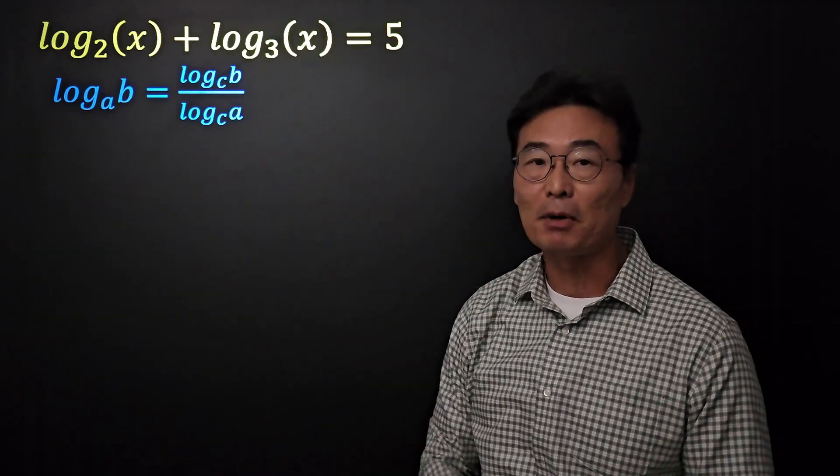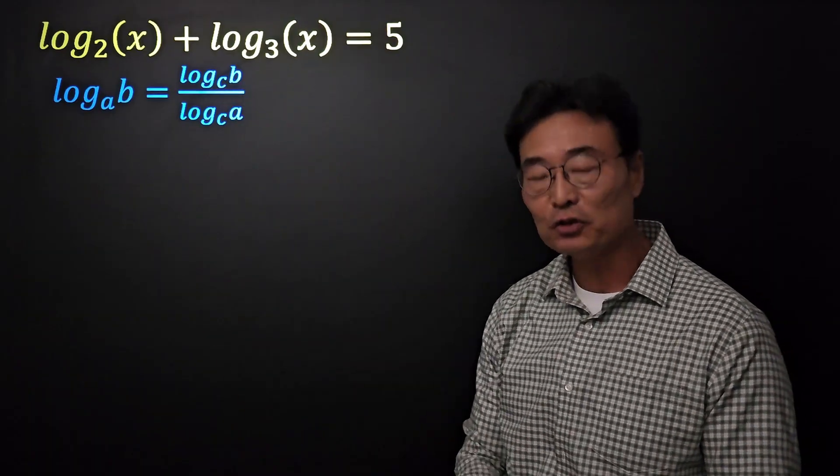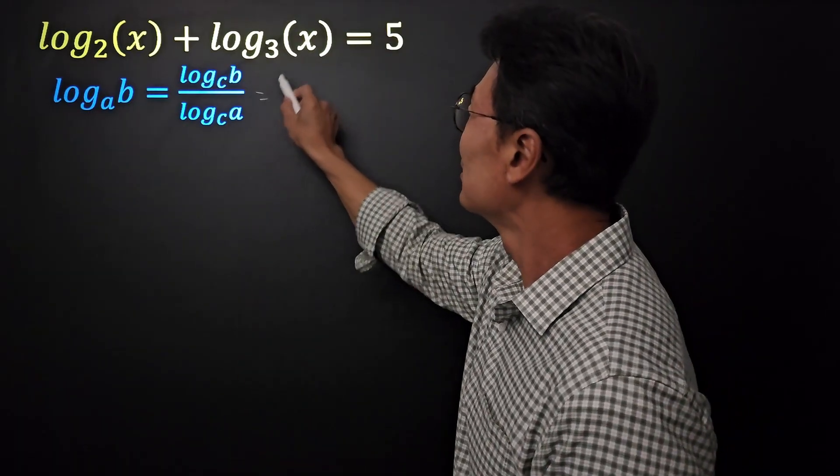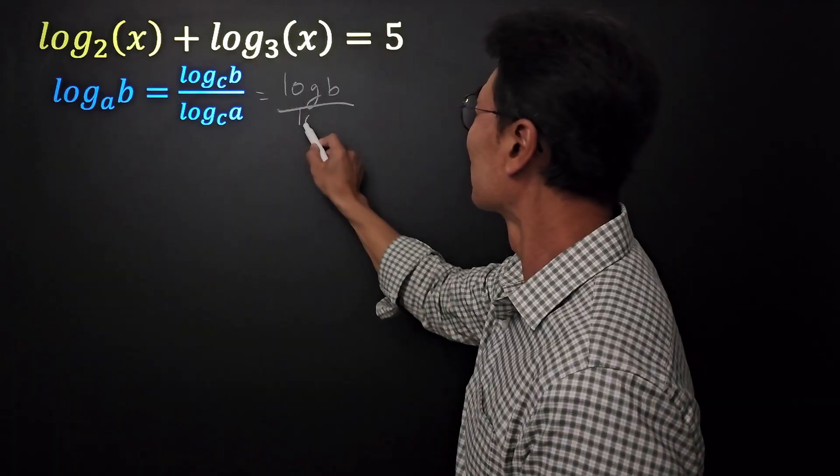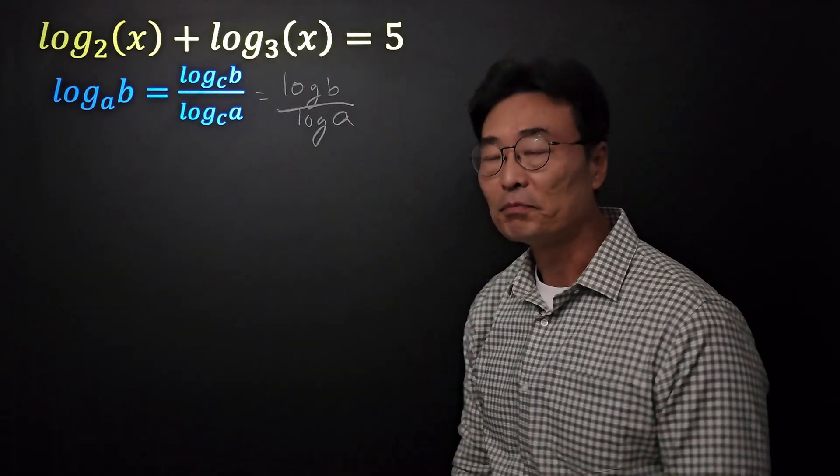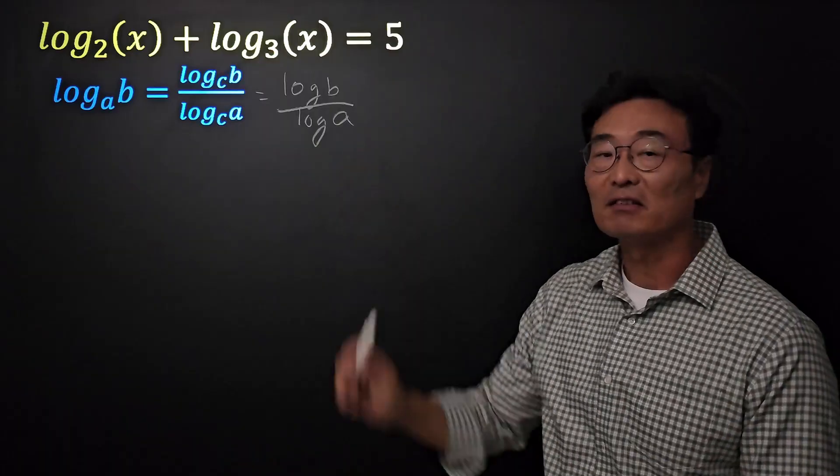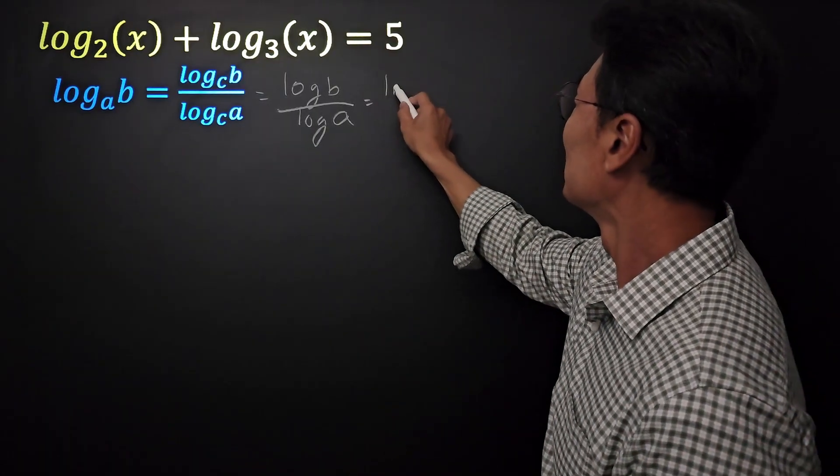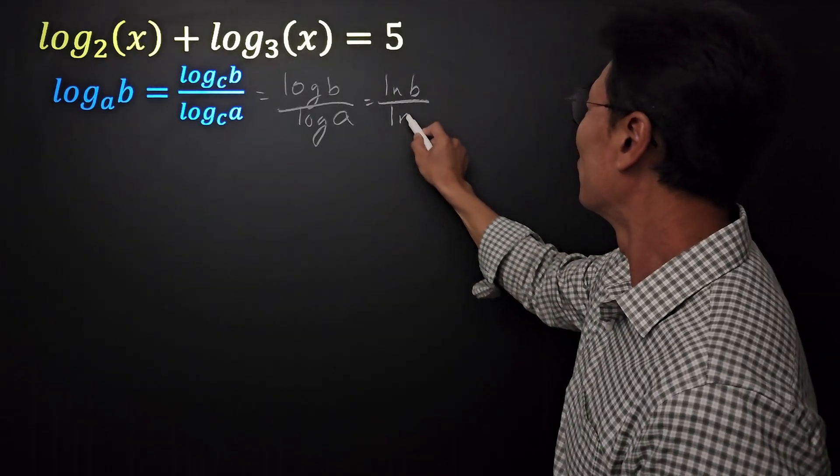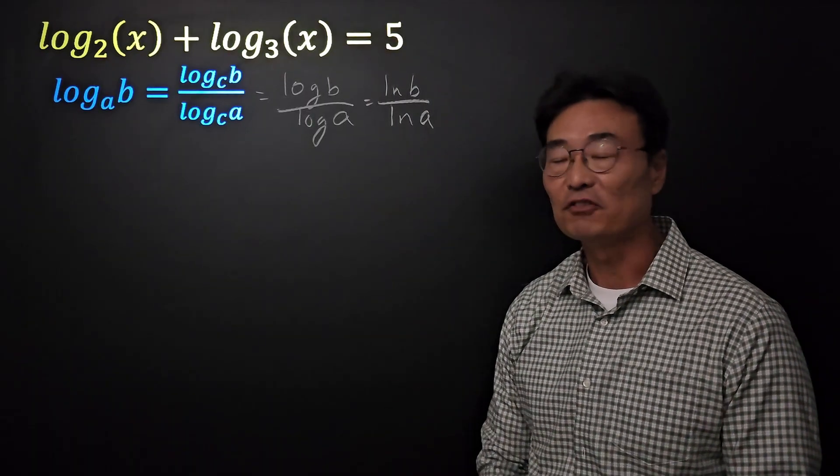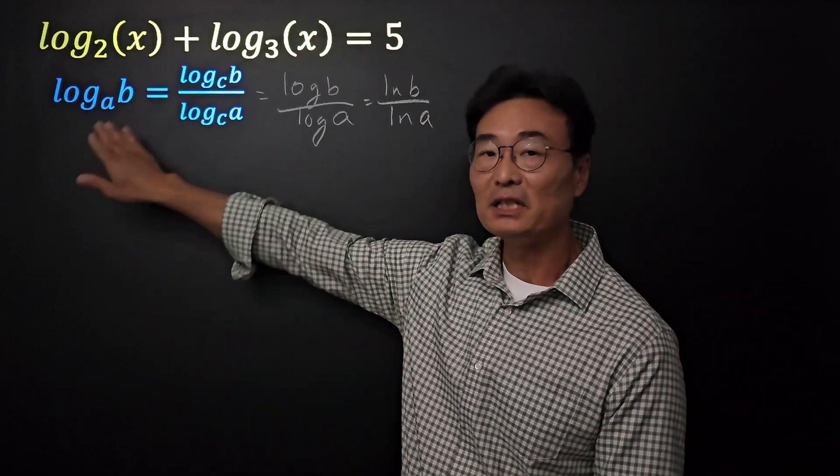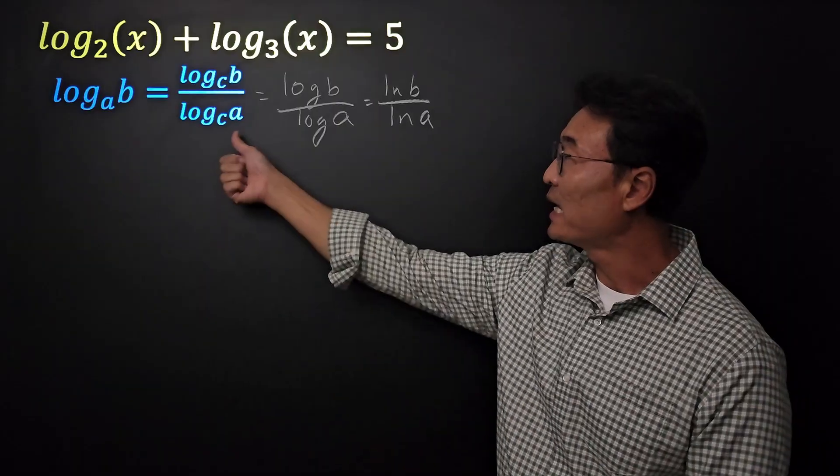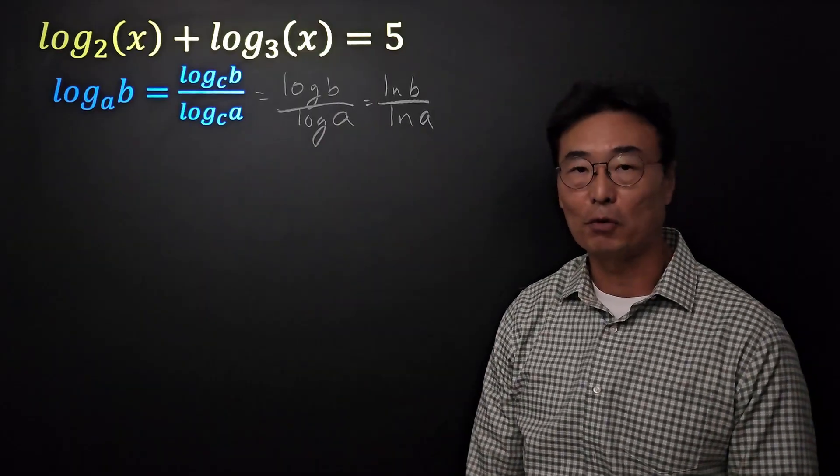Notice the base on the top and the bottom are the same. So the one we use more often is log of b over log of a, where the bases are 10. Or the one I prefer is natural log of b over natural log of a. So when you're given log of base a of b, you could rewrite it into any of these three formats.